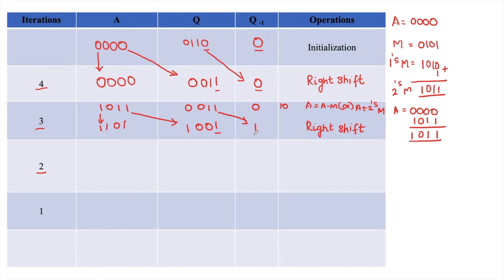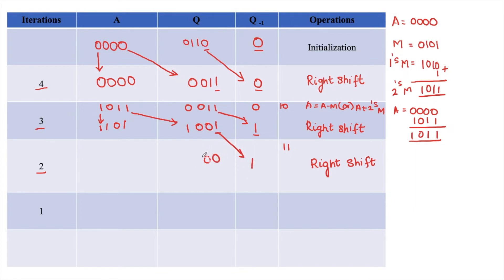When Q0 and Q-1 are both 1, just like 00, we only perform an arithmetic right shift. We shift the value: bring the last bit to Q-1 (it becomes 1), write the remaining 3 bits as-is, bring the last bit of A down, and write the remaining bits. After the shift, the values are updated accordingly. We reduce N by 1, giving N = 1. N is not 0, so we proceed with the algorithm again.